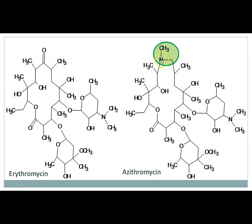but the differentiating point is here the ring size is 15-membered and instead of this carbonyl or double bond O, it has a nitrogen instead of that. So you have to remember this change between the erythromycin and azithromycin structure.